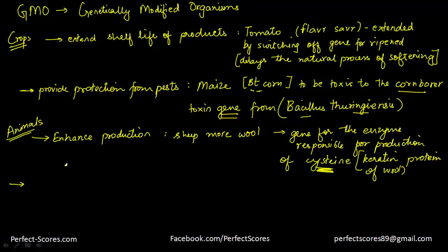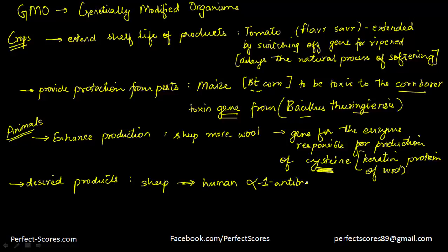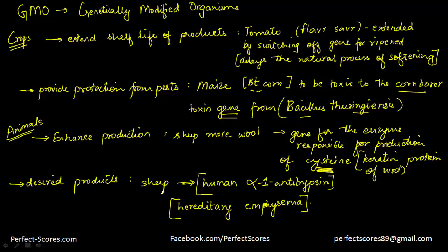Another example in case of animals is engineering animals to produce desired products. An example is sheep that produce human alpha-1-antitrypsin, which is given in most textbooks. This is essentially a medicine used to treat people suffering from hereditary emphysema, and it is found in the sheep's milk.